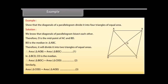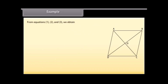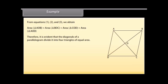Similarly, area of triangle COD is equal to area of triangle AOD — mark it as 3. From equations 1, 2, and 3 we obtain: area of triangle AOB is equal to area of triangle BOC, which equals area of triangle COD, which is equal to area of triangle AOD. Therefore, it is evident that the diagonals of a parallelogram divide it into four triangles of equal area.